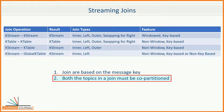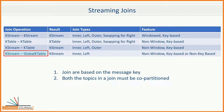The input topics of the join must have the same number of partitions, and data on both the topics must be co-partitioned. That means all applications that write to the input topics must have the same partitioning strategy, so that records with the same key are delivered to the same partition number. If the inputs of a join are not co-partitioned yet, you must ensure this manually by rewriting the data into a new topic that has the same number of partitions and uses the same partitioner. This is a mandatory requirement for parallel processing in Kafka.